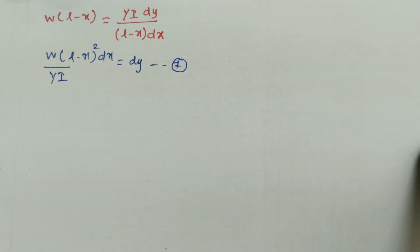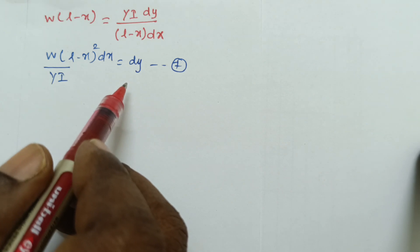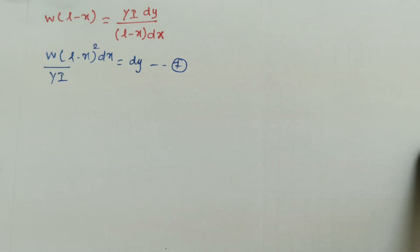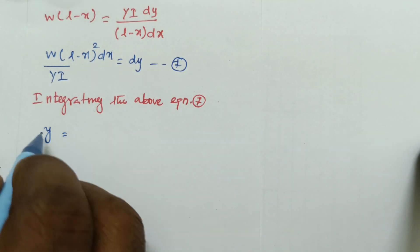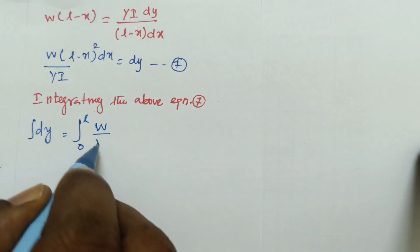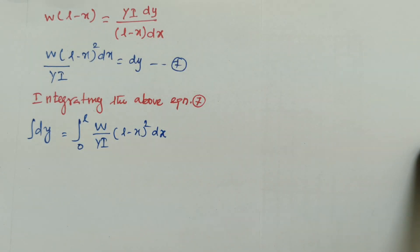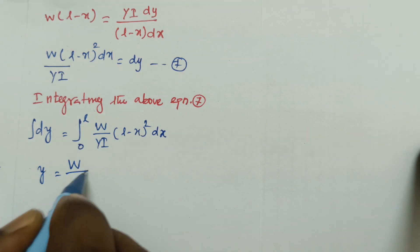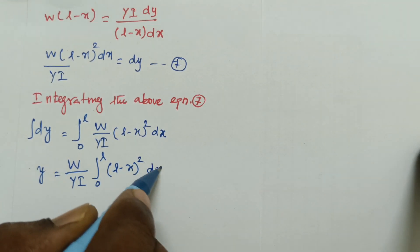Now the total depression at the free end of the cantilever can be found by integrating the equation. We want the value of the whole depression inside the cantilever. You can find the y value — the depression value — by integrating. We know that y equals the integral from 0 to L of (W/YI) into (L minus X)² times dx. Then y equals W/YI times the integral from 0 to L of (L minus X)² dx.